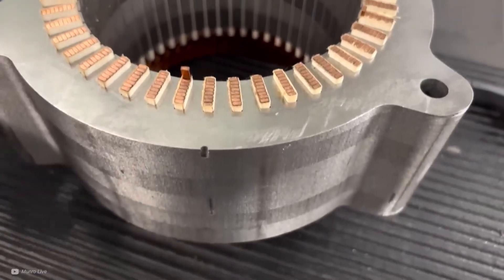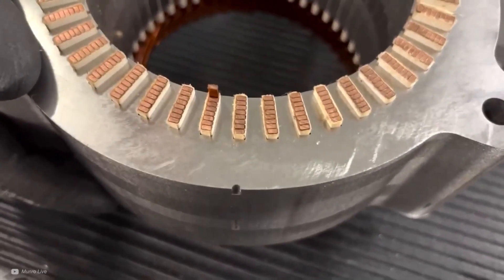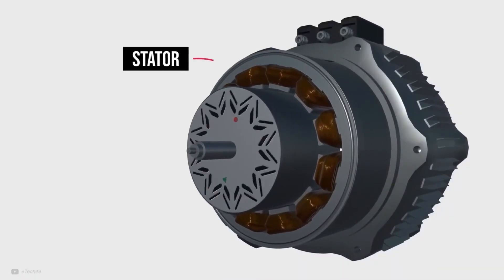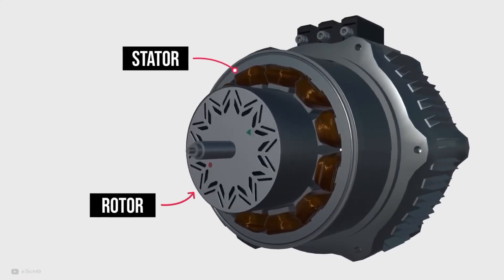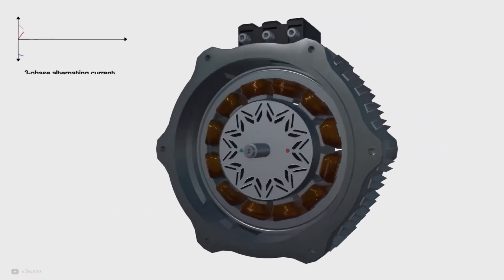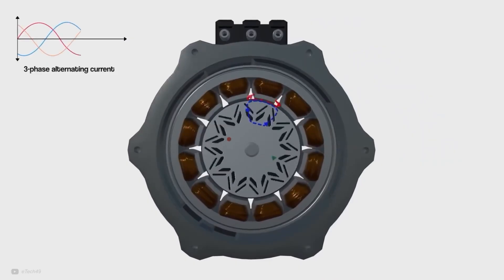This configuration instantly doubles the active magnetic surface area. More surface area means more torque for the same size. More interaction between the stator and the rotor means higher efficiency.